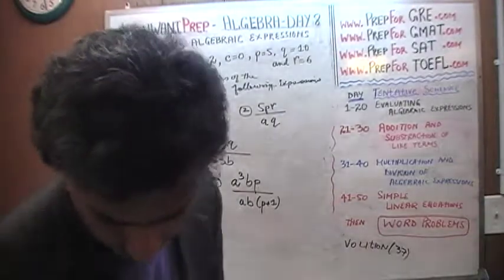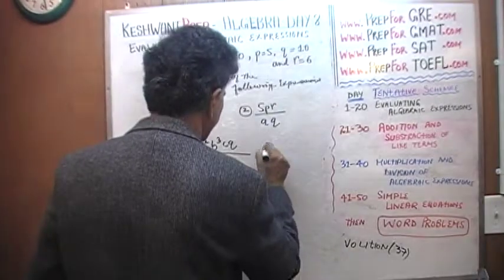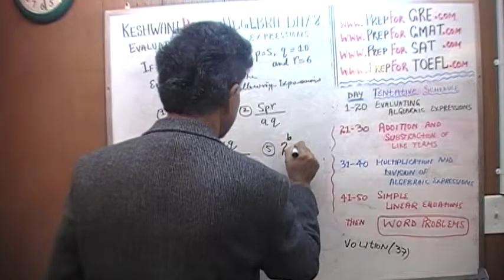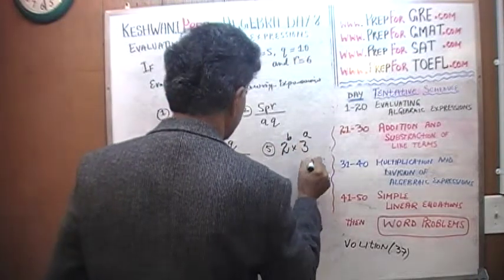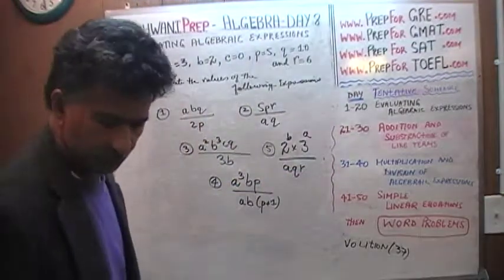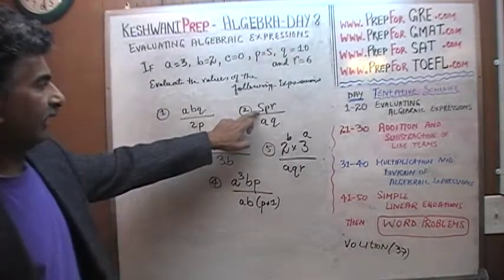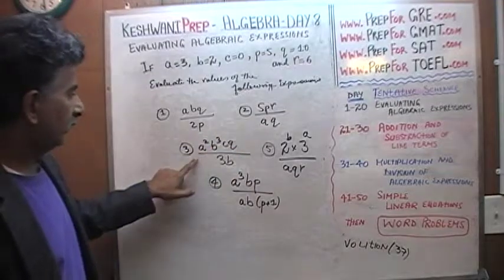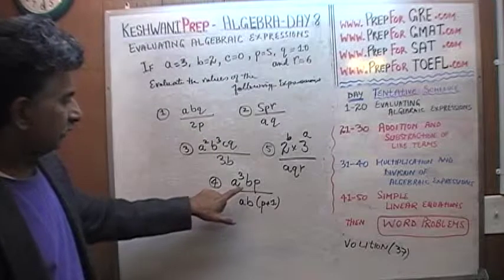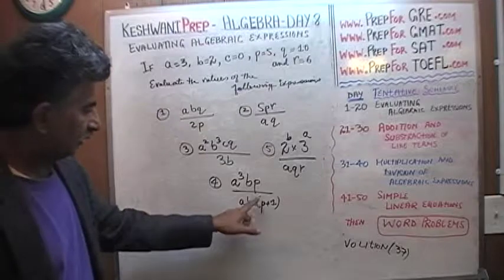Oh I left out one. Number 5 I left out. Let's put number 5 here. 2 raised to B times 3 raised to A over A times Q times R. And the rest of them are A times B times Q over 2 times P. 5 times P times R over A times Q. A squared times B cubed times C times Q over 3B. A cubed times B times P over A times B times P plus 1.